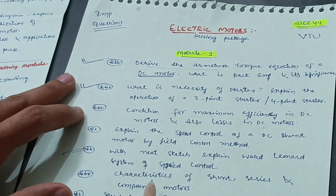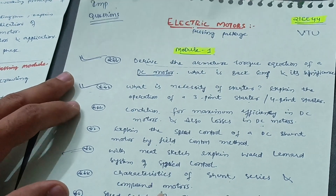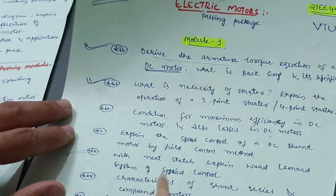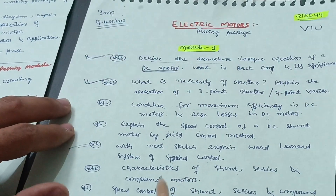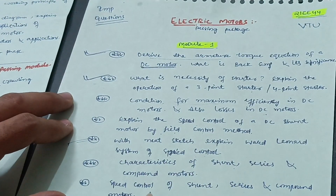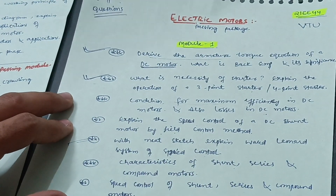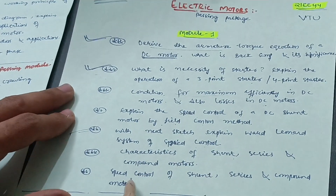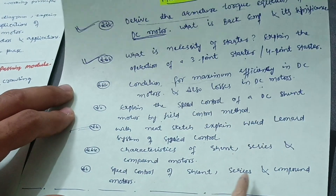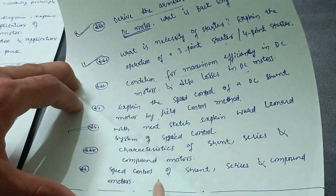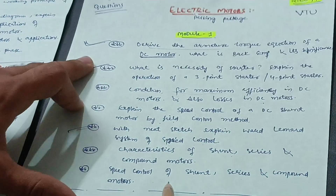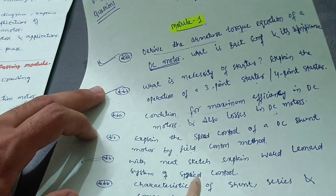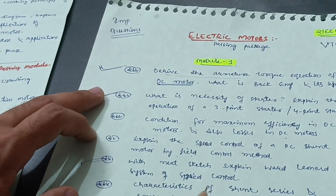Also cover the characteristics of shunt, series and compound motors — this is an easier part. If you have the ability to memorize theory, you can write it down on your answer sheet easily. Speed control of shunt, series and compound motors is also among the most important questions. These seven questions from module one are the easier ones to focus on if you want to score.